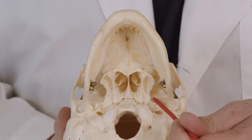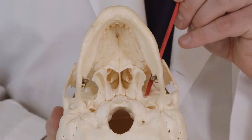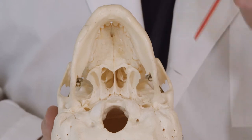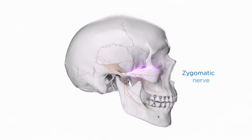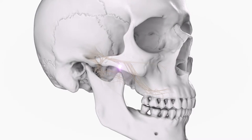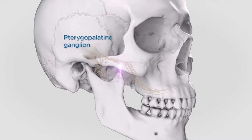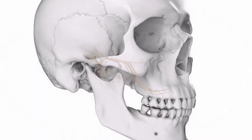The maxillary nerve exits the cranium through the foramen rotundum to reach the pterygopalatine fossa where it gives off several branches: the zygomatic nerve, the pterygopalatine nerve, and the posterior superior alveolar nerve. The zygomatic nerve enters the orbit through the inferior orbital fissure, and its branches supply the skin on the side of the forehead and prominence of the cheek. The short pterygopalatine nerve trunks descend vertically through the pterygopalatine ganglion, with branches distributing sensory fibers to the mid-face, including orbital nerves and posterior nasal nerves innervating the ethmoidal and sphenoidal sinuses, periosteum of the orbit, nasal turbinates, and posterior nasal septum.